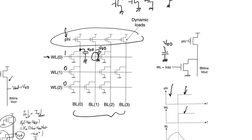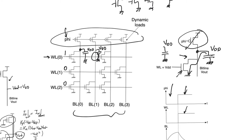If there is a transistor in the cell, the NMOS turns on and discharges the bit line capacitor — pre-charged to VDD — down toward zero. This discharge current is transient, not steady-state, because the PMOS is off while phi equals 1. So the output reads zero with no static current flowing.